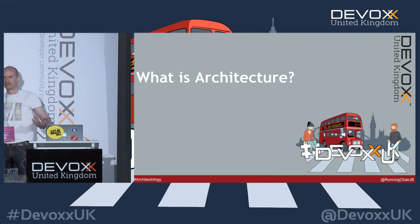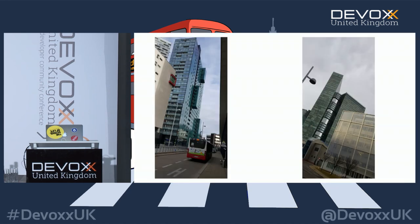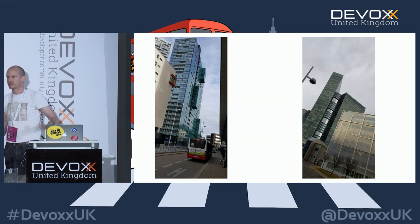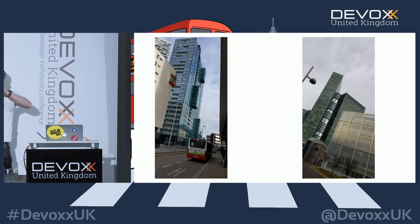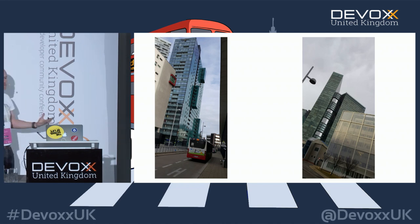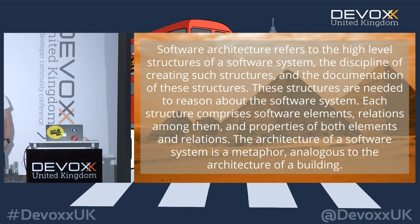I'm going to start by going back to first principles. What is architecture? I took these two pictures in Vienna when I was at a conference last month. I think they're interesting buildings. When we talk about architecture in software, the term is derived from building architecture. The architects tried to do some interesting things visually, but also it's their business to make the buildings work — both the physical form and its function.